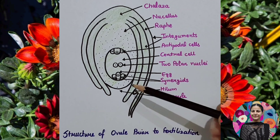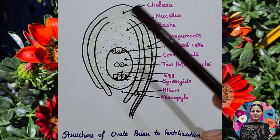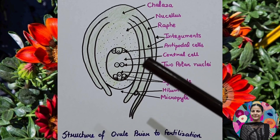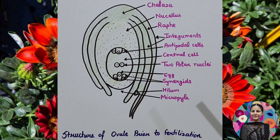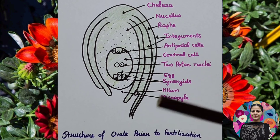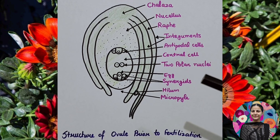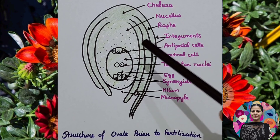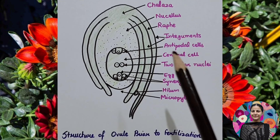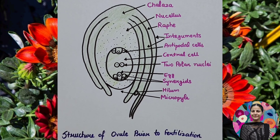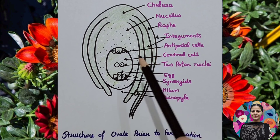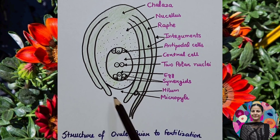Before fertilization, inside the ovule there are megaspore mother cells. These megaspore mother cells undergo meiosis, producing four megaspores. Three of these megaspores degenerate, and only one functional megaspore undergoes mitosis to form the embryo sac — a seven-celled, eight-nucleate structure.